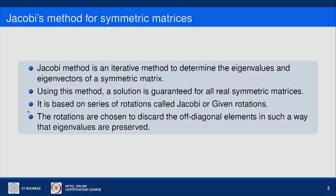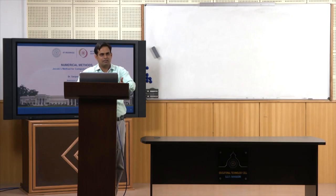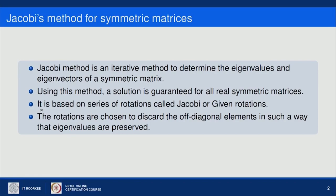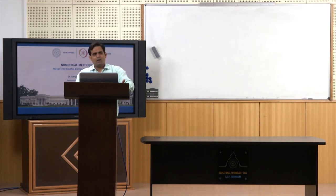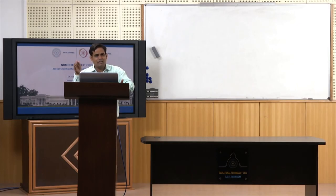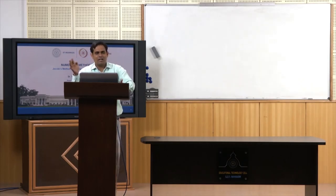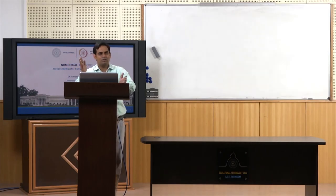As mentioned, it is based on a sequence of similarity transformations applied to the given matrix in such a way that all the off-diagonal elements become 0 after a series of transformations. Making off-diagonal elements 0 means there should not be any change in the eigenvalues of the matrix. That is why we use similarity transformations — because two similar matrices will have the same spectrum.